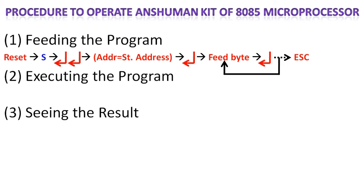The Anshuman kit provides a PC keyboard to feed the program. On the keyboard we have to press S, then press the enter key 2 times. Once you see ADDR on the 16x2 LCD, we have to press the starting address. In the program we have taken 6000 as the starting address, then press enter again. Then feed the byte — the first byte will be 3E as seen in the program. Press enter and continue this loop until we feed the last byte of the program, which is CF — the opcode of RST1. Once you feed the last byte, press the escape key. That is the indication that the program is over.